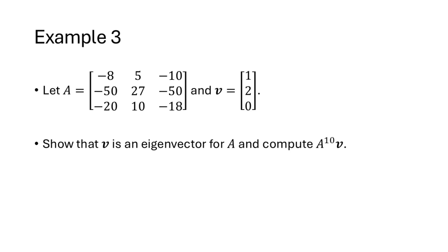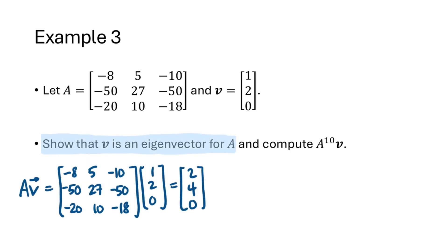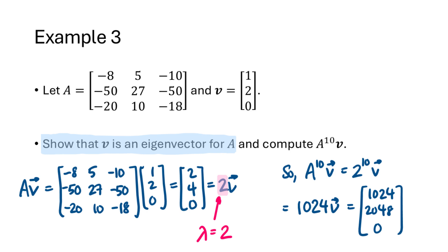Let's look at a quick example. We have a matrix A and a vector V, and we want to show that V is an eigenvector for A and compute A to the tenth times V. We multiply A times V and get 2, 4, 0, which is 2 times V. So V is an eigenvector with eigenvalue lambda equals 2. Therefore A to the tenth times V equals 2 to the tenth times V. Since 2 to the tenth is 1024, we get the result 1024, 2048, 0.